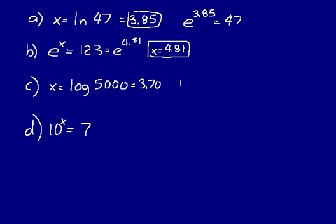That means 10 to the 3.70 equals 5,000. You can prove that to yourself — do 10 raised to the 3.7 power on your calculator, and you get 5,011.87. Of course, I rounded that exponent result, which is why it's not quite 5,000. But this proves that it does equal approximately 5,000.